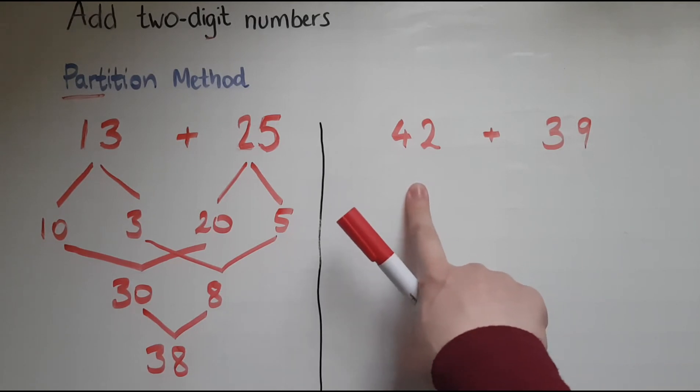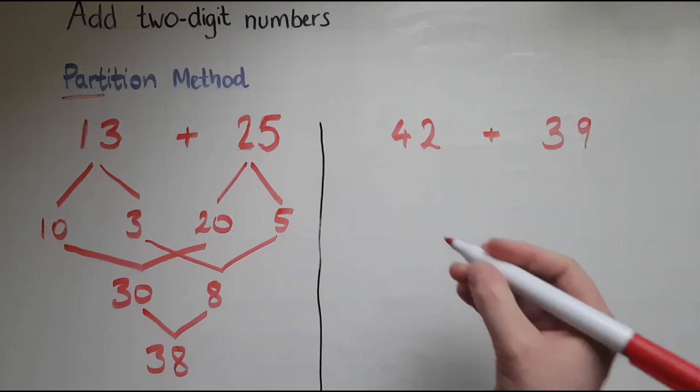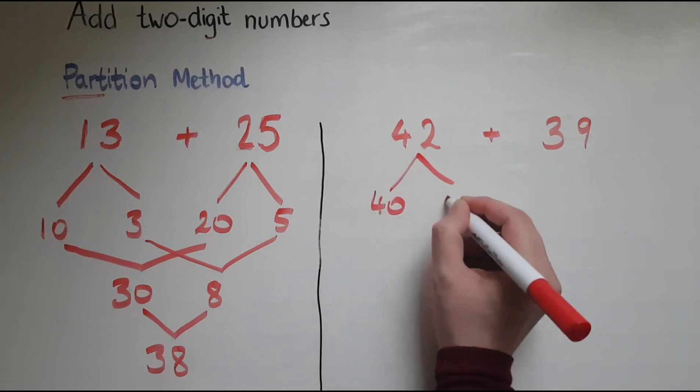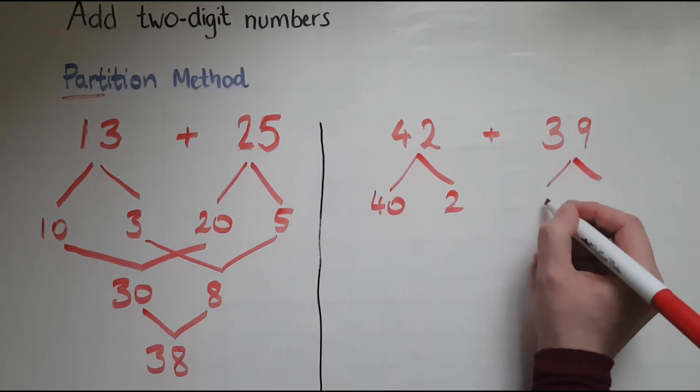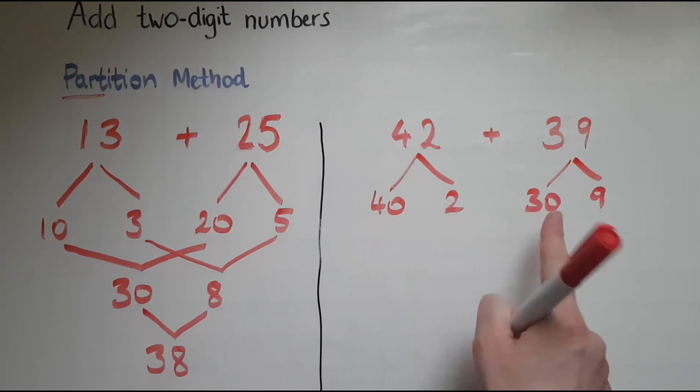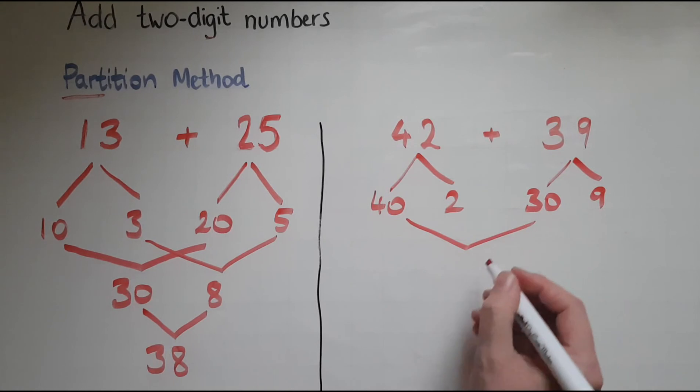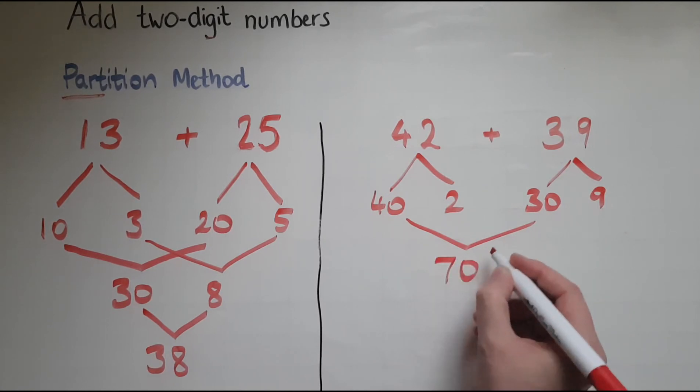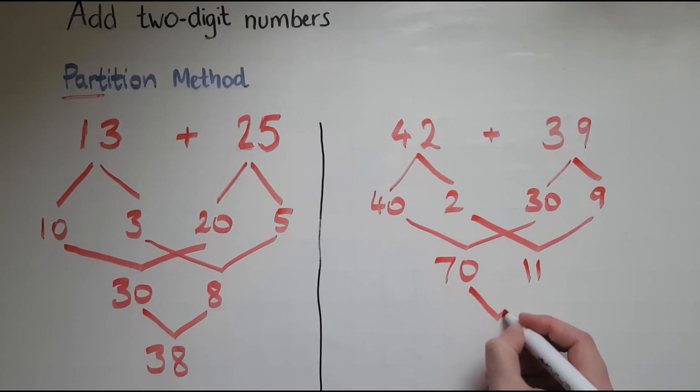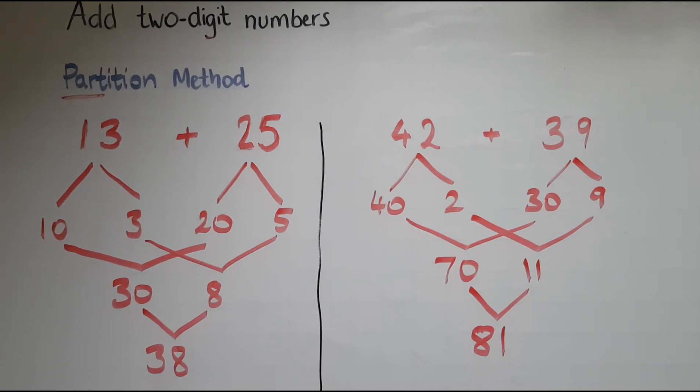Let's look at another example. We've got 42 and 39. So 42 is broken down into 40 and 2. 39 is broken down into 30 and 9. 40 and 30 makes 70. 2 and 9 makes 11. So 70 and 11 is 81. So this is how to use the partition method to add numbers.